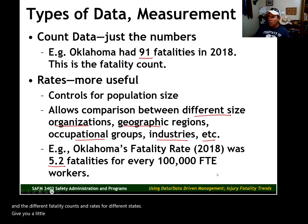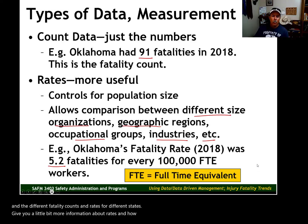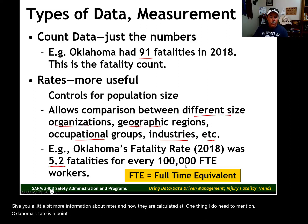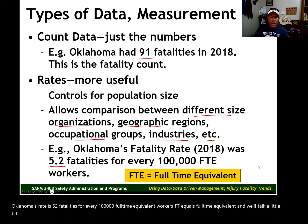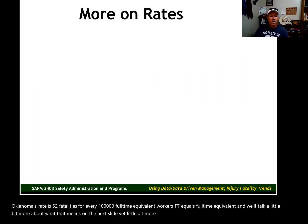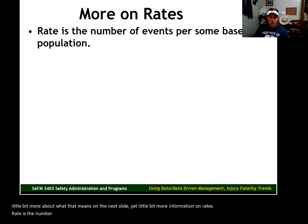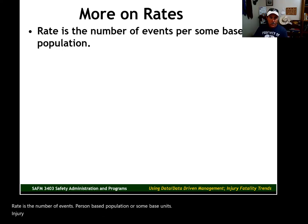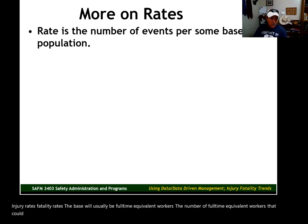A little bit more information about rates and how they are calculated. Oklahoma's rate is 5.2 fatalities for every 100,000 full-time equivalent workers — FTE equals full-time equivalent. Rate is the number of events per some base population or base unit. For injury rates and fatality rates, the base will usually be full-time equivalent workers. That could be 100, 10,000, or 100,000, depending on the type of rate.